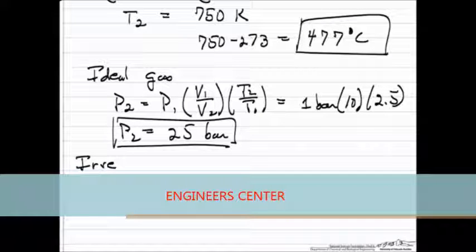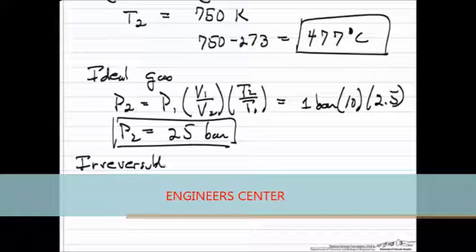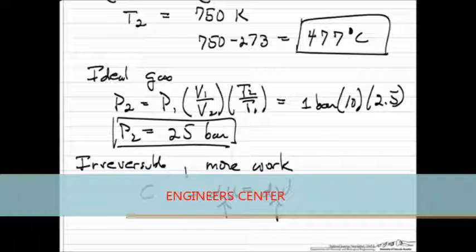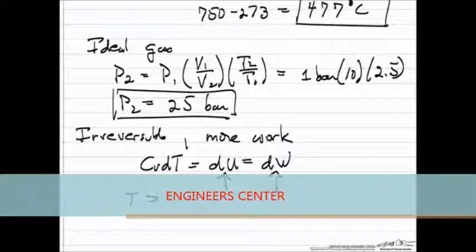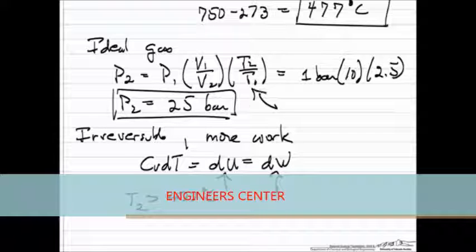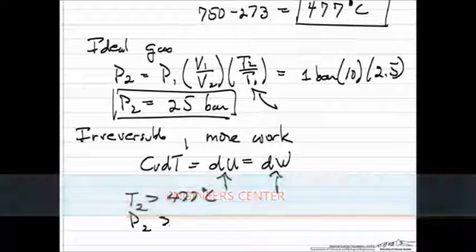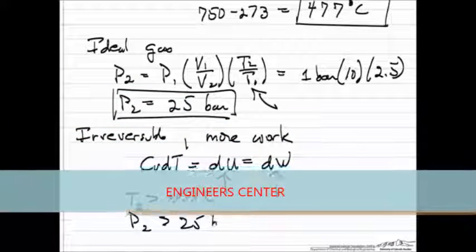Of course, we know it's irreversible, which means it's going to take more work to get to the same volume, and since dU equals dW, this goes up, this goes up, and since dU is cv dT, that means the temperature is higher. So when it's irreversible, the temperature is going to be higher than 477°C, which means if we look here, the pressure then must be higher than 25 bar.